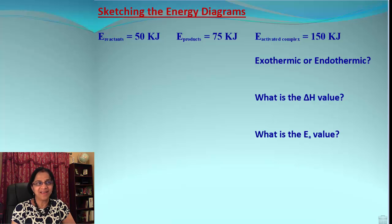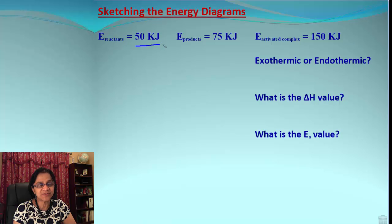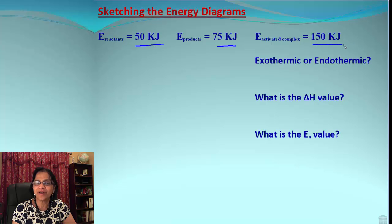Now let's practice actually drawing an energy diagram. The energy for reactants is 50 kilojoules, the energy of products is 75 kilojoules, and the energy of the activated complex is 150 kilojoules.